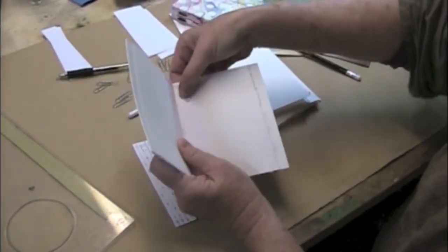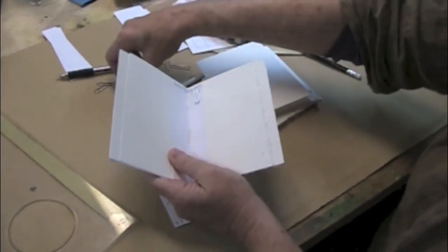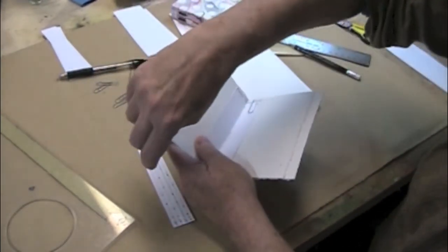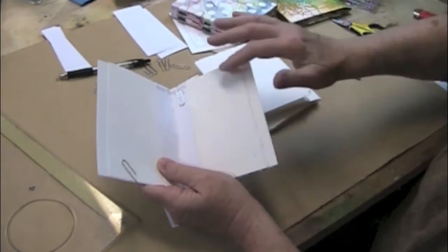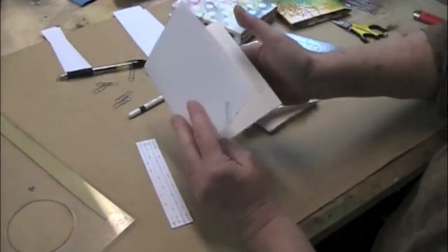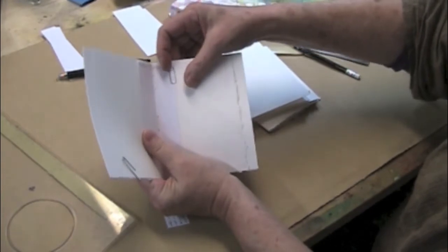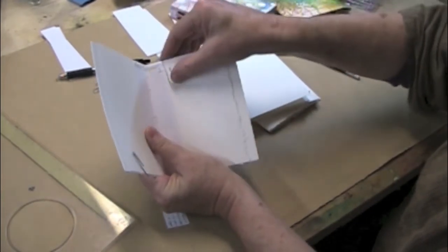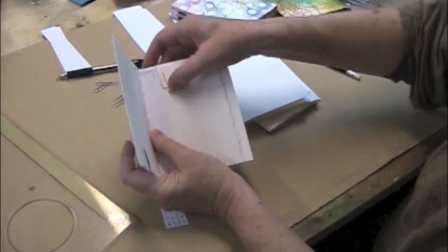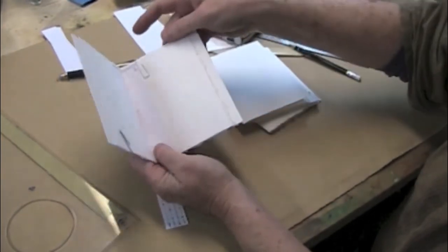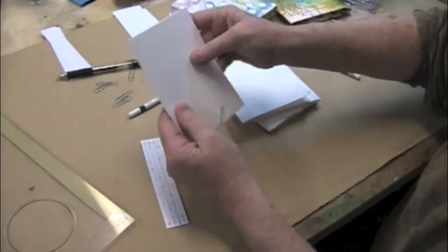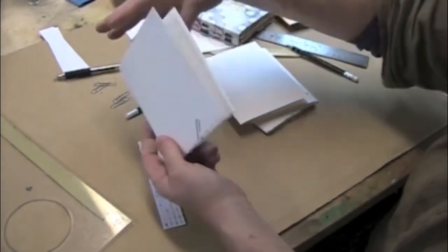Secure with a paper clip. You can use binding clips, you can use one, you can use four. I find two is enough. Just make sure you've got that covered, where the piercing template is attached to the signature on the inside. So we're done with number one.